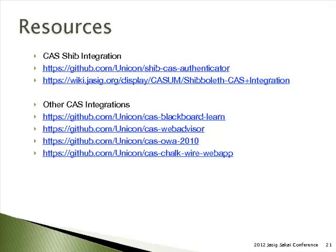Here are some resources. The SHIB-CAS authenticator that Dima put together is open source and available on GitHub — you're welcome to download, use, and play with it. We're happy to answer questions about it on the CAS dev list or via direct email. The J-SIG website also has information on CAS-SHIB integration. UNICON has also started using GitHub with a public repo to share other interesting CAS and SHIB integrations. A lot of times in client engagements we end up with open source code that isn't obviously suited for the core CAS or SHIB distributions, so we track these in public GitHub repos because we want to share them.